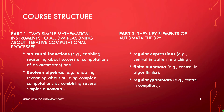This course is a basic introduction to automata theory. It consists of two parts. In the first part of the course, we introduced two simple mathematical instruments to allow reasoning about iterative computational processes. On one hand, we will discuss structural induction — for example, to enable reasoning about successful computations of an automaton. And on the other hand, we are going to discuss Boolean algebras — for example, enabling reasoning about building complex computations by combining several simpler automata.